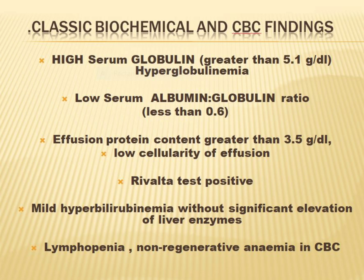One of the most important biochemical findings is an elevated serum globulin level, typically greater than 5.1 grams per deciliter, which we see in almost 90% of cases. This is mostly due to gamma globulin production as part of the heavy immune response against the macrophage-infected virus. We would also see a low albumin level, so the albumin-to-globulin (A:G) ratio will be lower — typically less than 0.6.